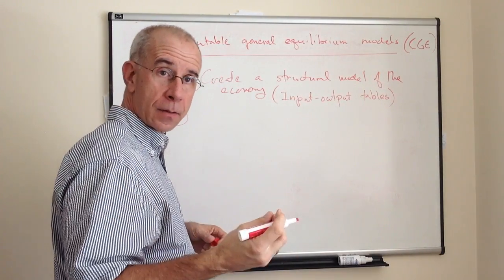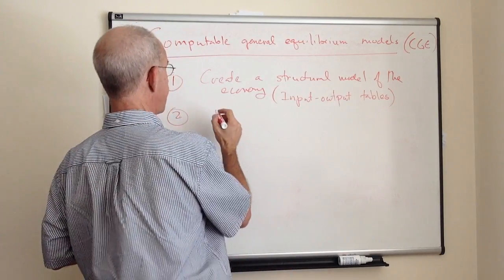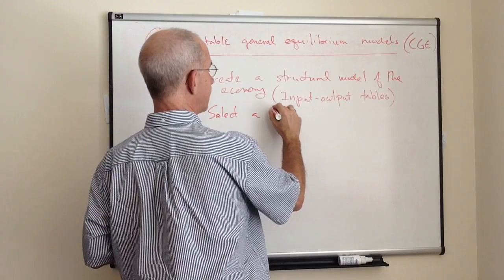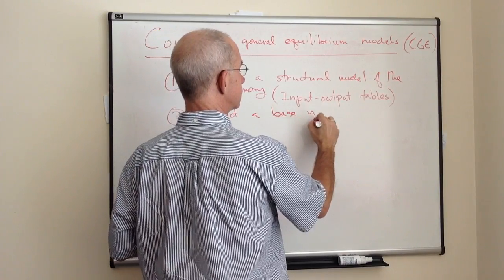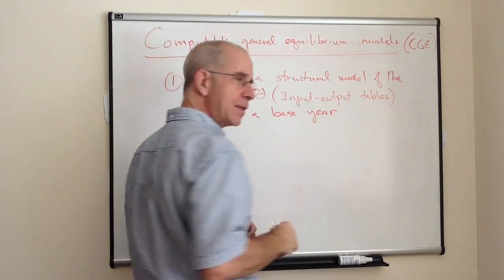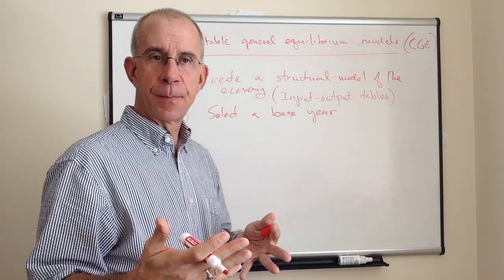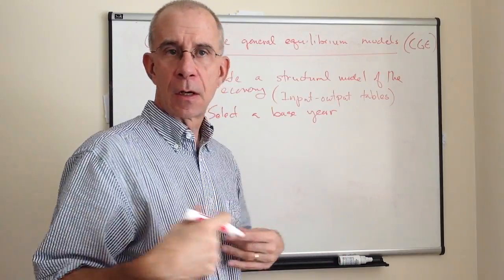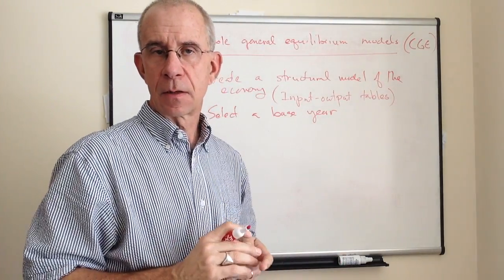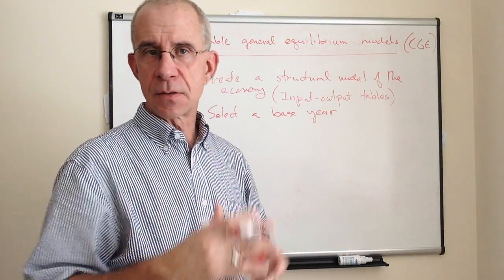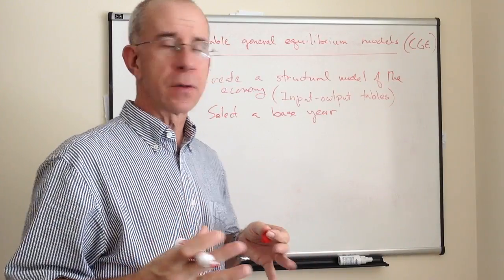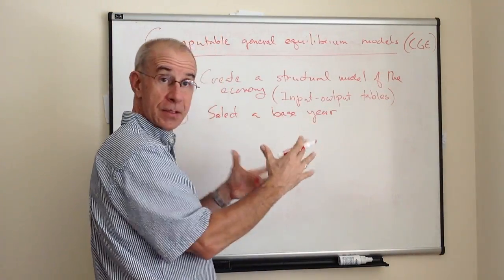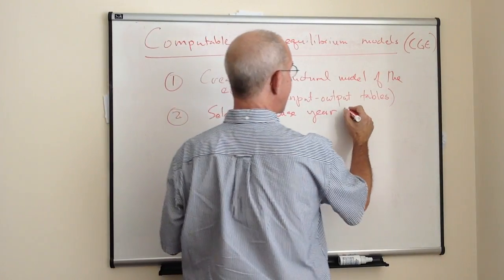A modeler will then select a base year, a base year where they've got good information about the quantity produced across the entire economy, consumption and imports, all these different factors. They've got this base year with data.